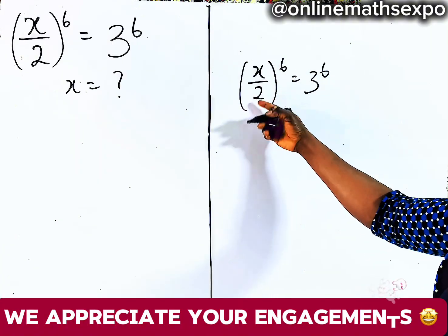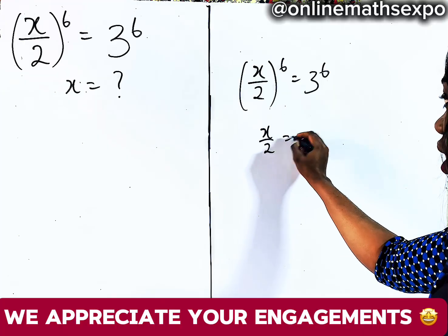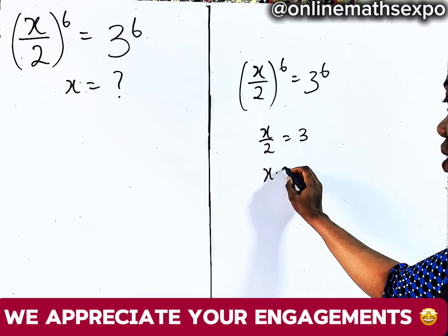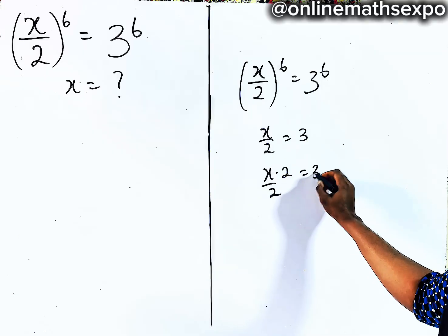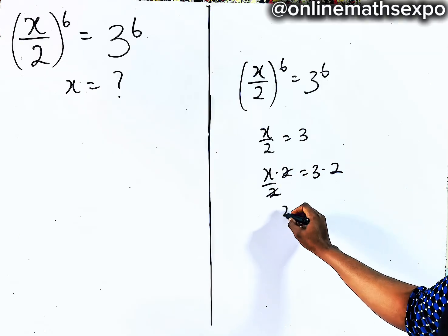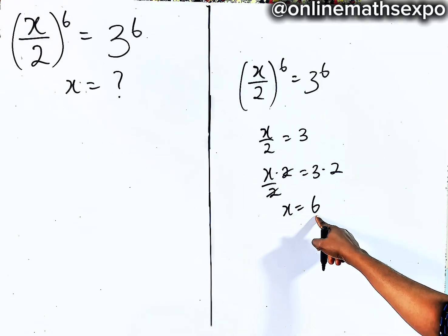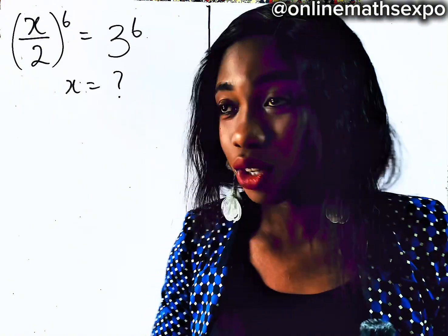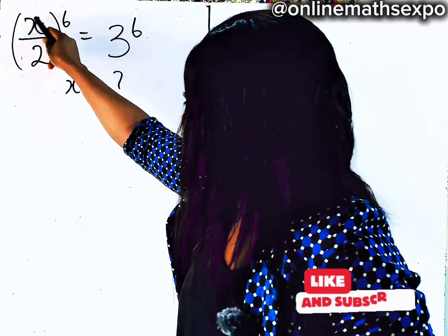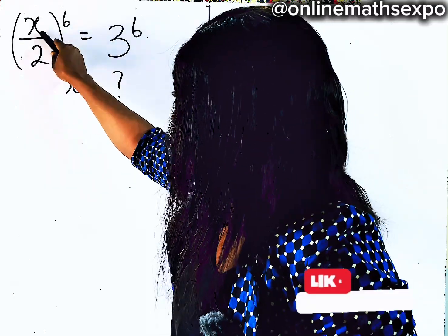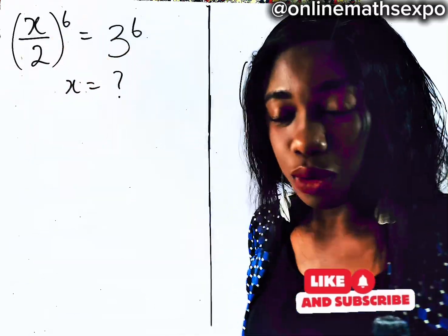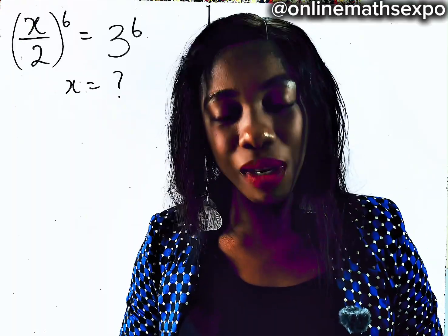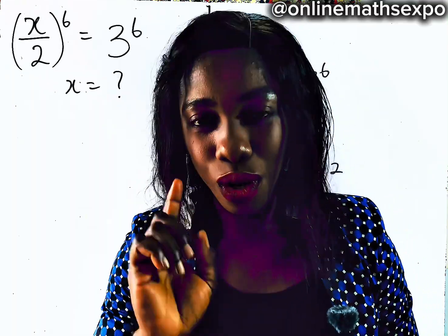The powers are the same, just equate the bases. So you have this — to get x, you multiply both sides by 2. That will give you x equals 6. Just know that 6 is one of the solutions of x, because what you have here is raised to the power of x, giving you a polynomial of degree 6. It means we expect to have 6 solutions for x.